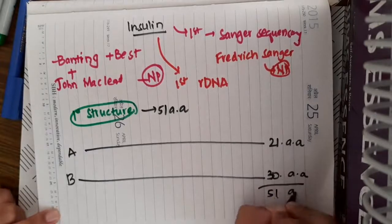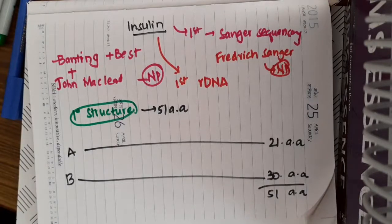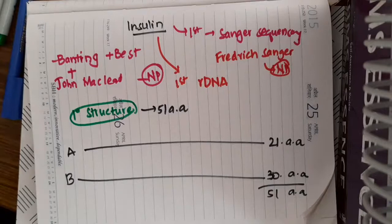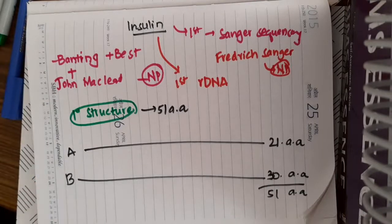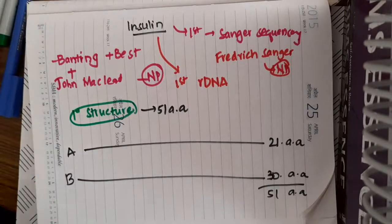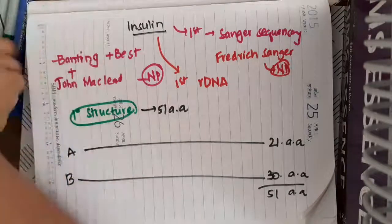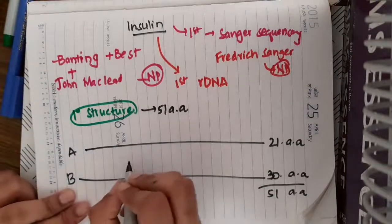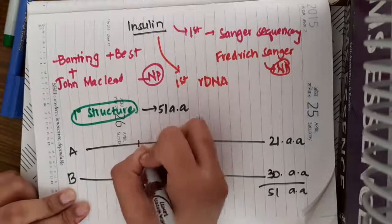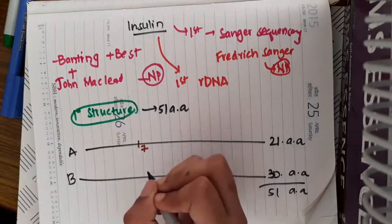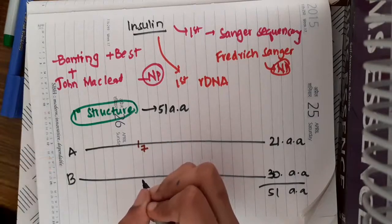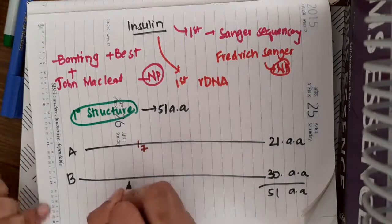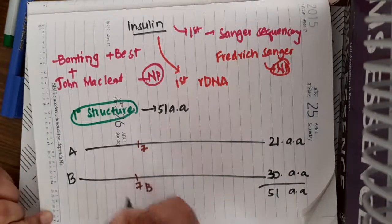This insulin chain has three disulfide bonds. The first disulfide bond is present between the 7th amino acid in A chain and 7th amino acid in B chain.